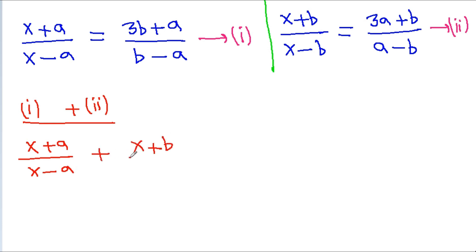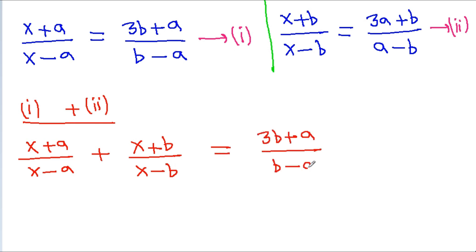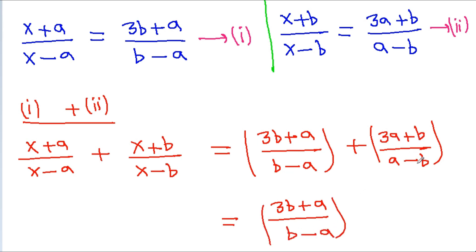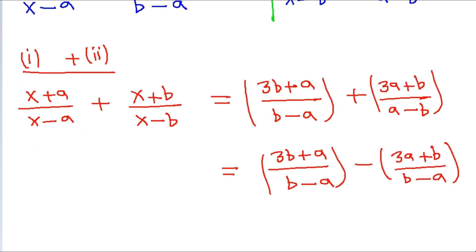Adding equation 1 and equation 2, we get x plus a by x minus a plus x plus b by x minus b, which is equal to 3ab plus a by b minus a, plus 3ab plus b by a minus b. This equals 3ab plus a by b minus a, minus 3ab plus b by b minus a.